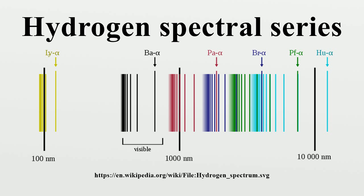The Brackett series is named after the American physicist Frederick Sumner Brackett, who first observed the spectral lines in 1922. The Pfund series was experimentally discovered in 1924 by August Hermann Pfund.